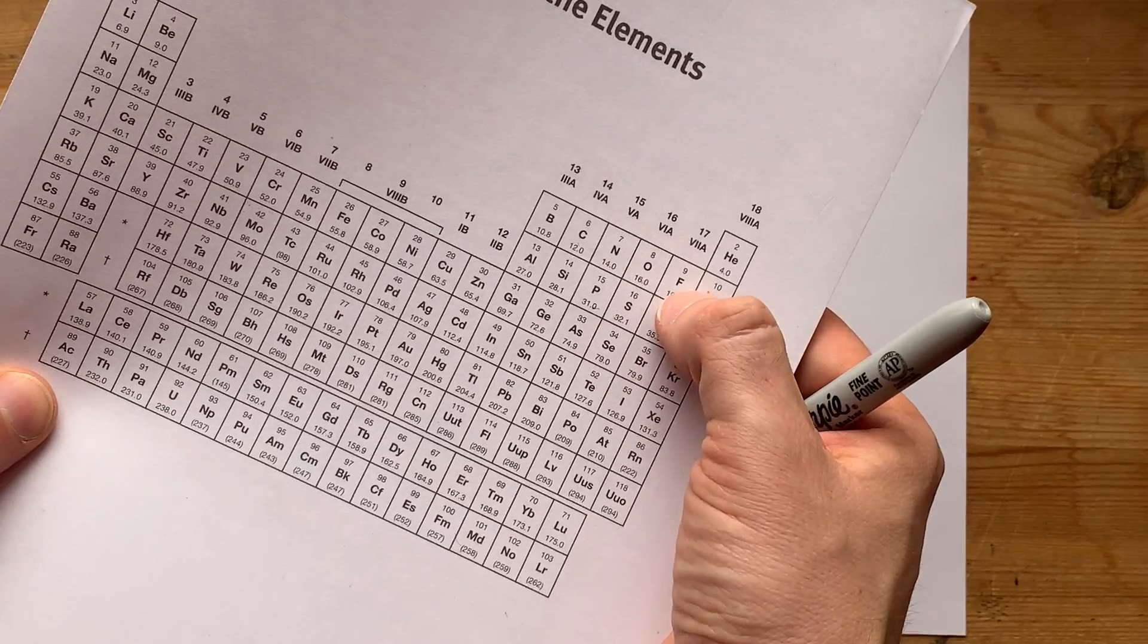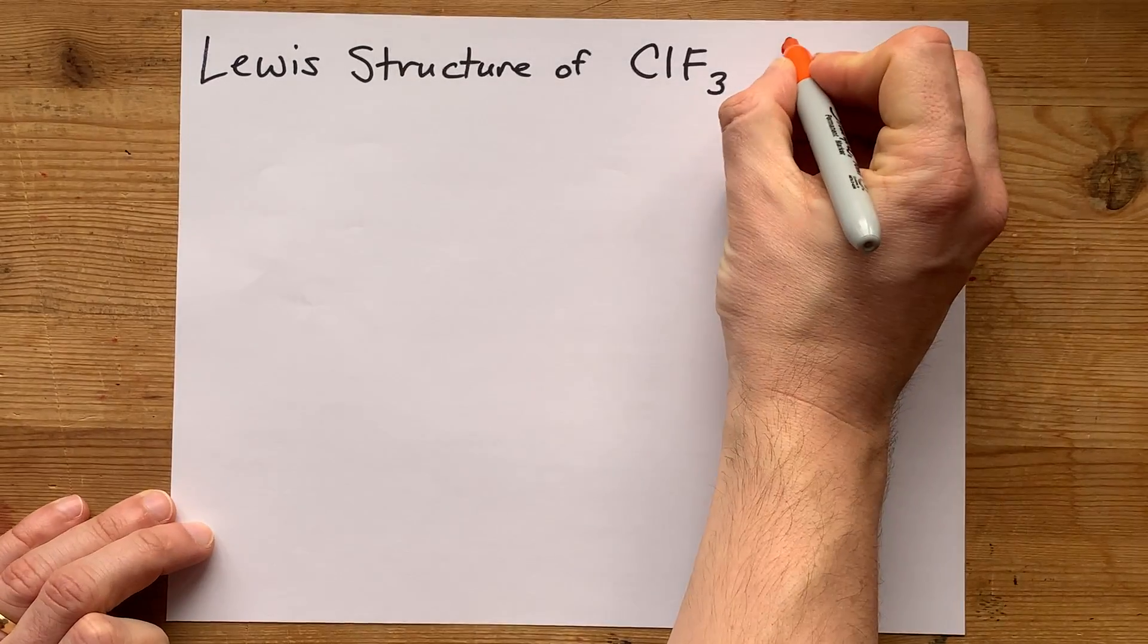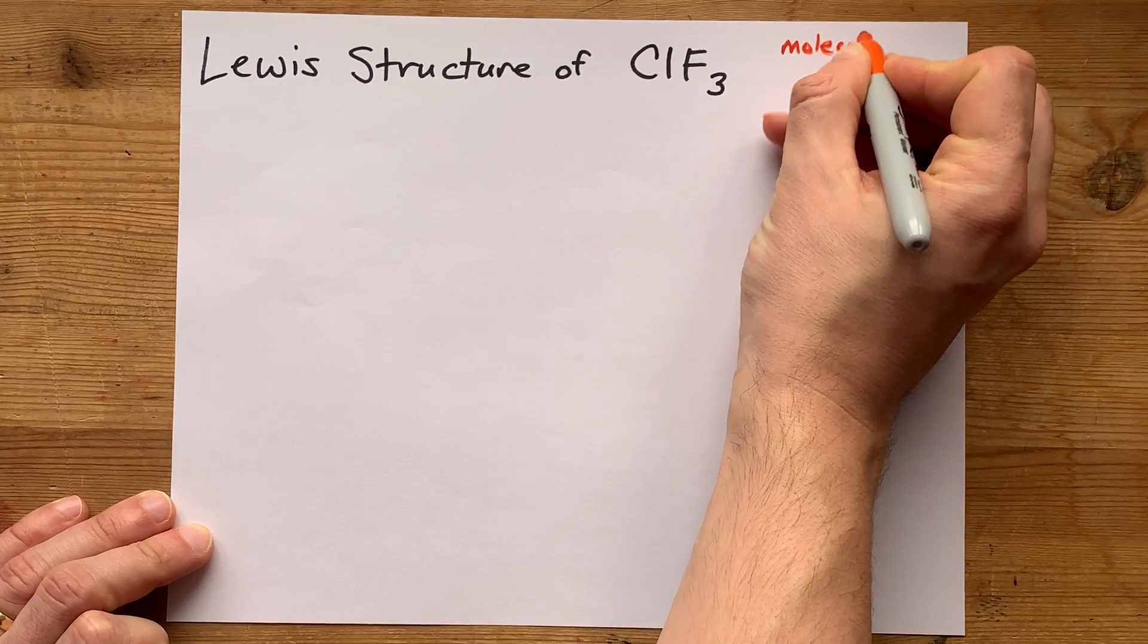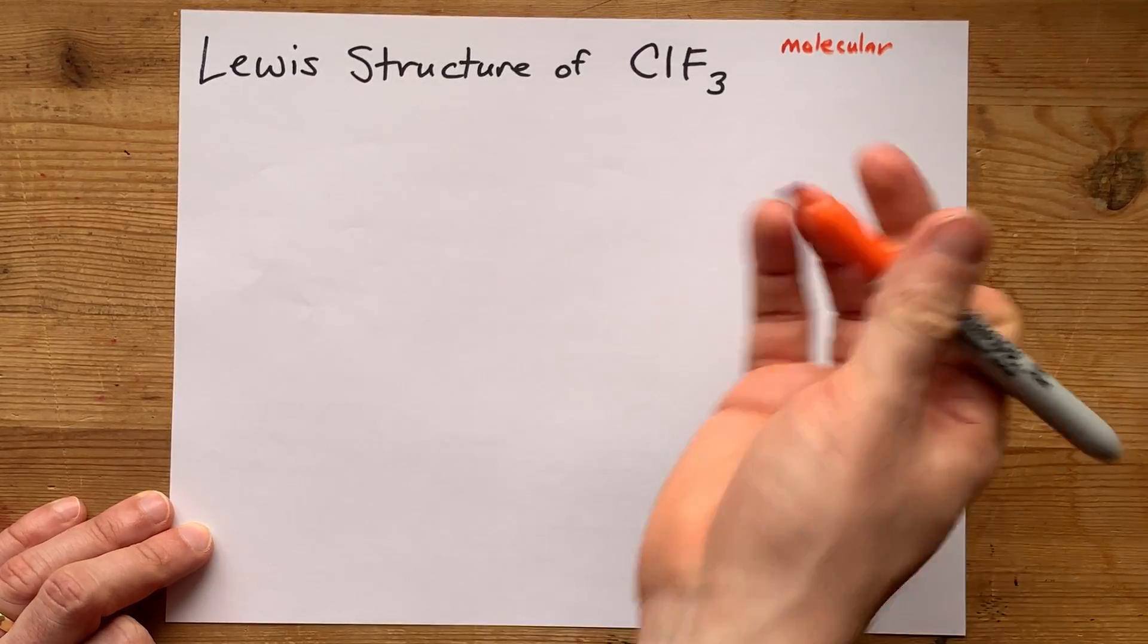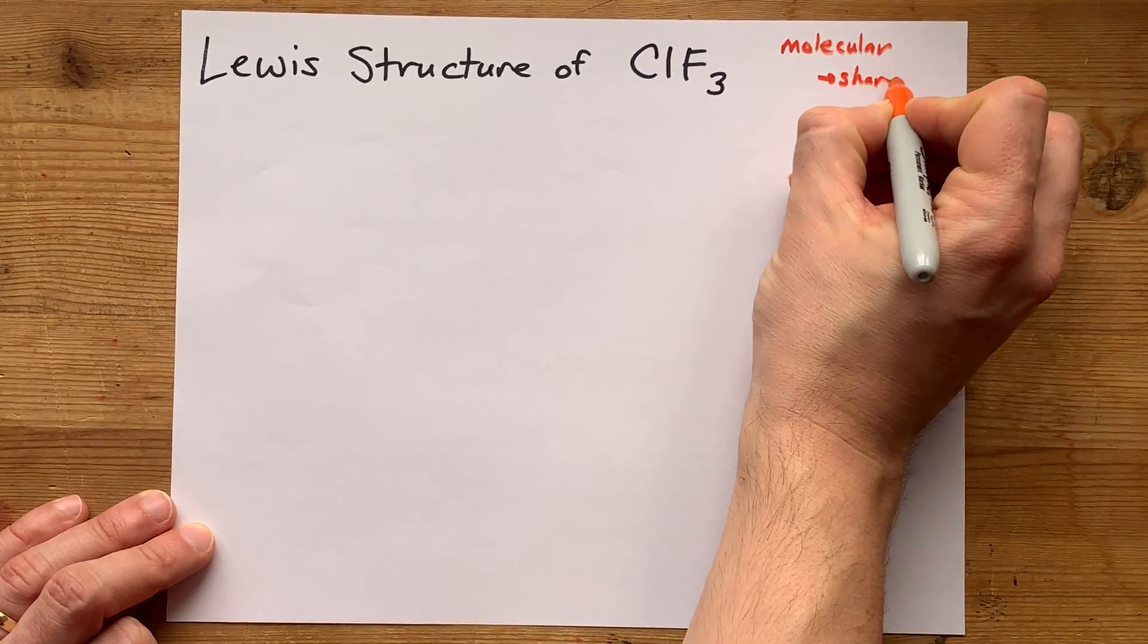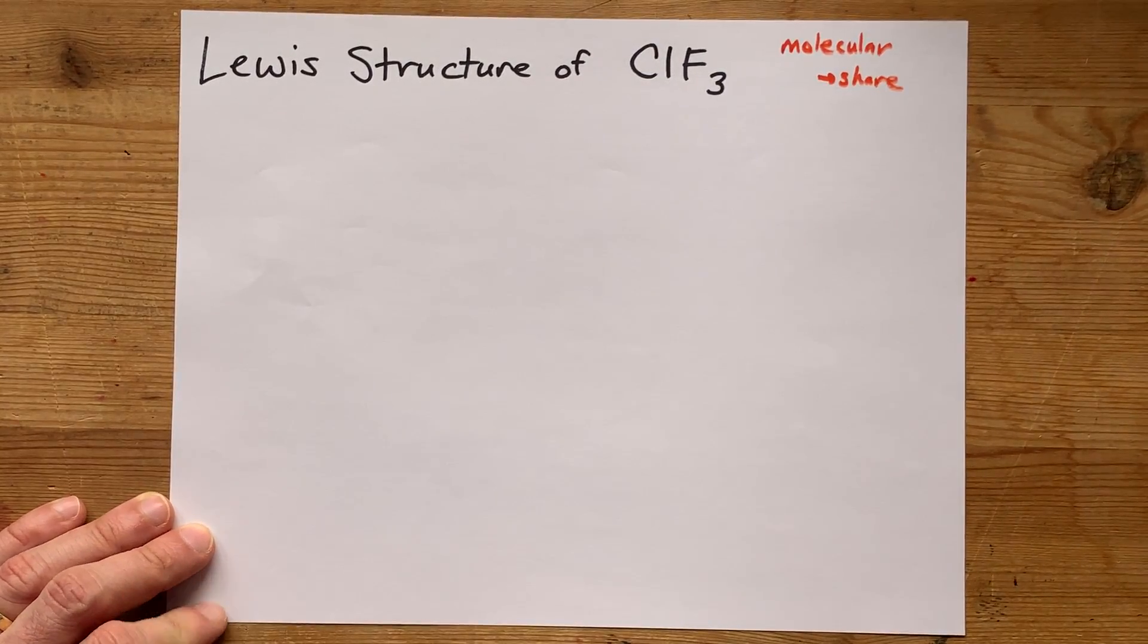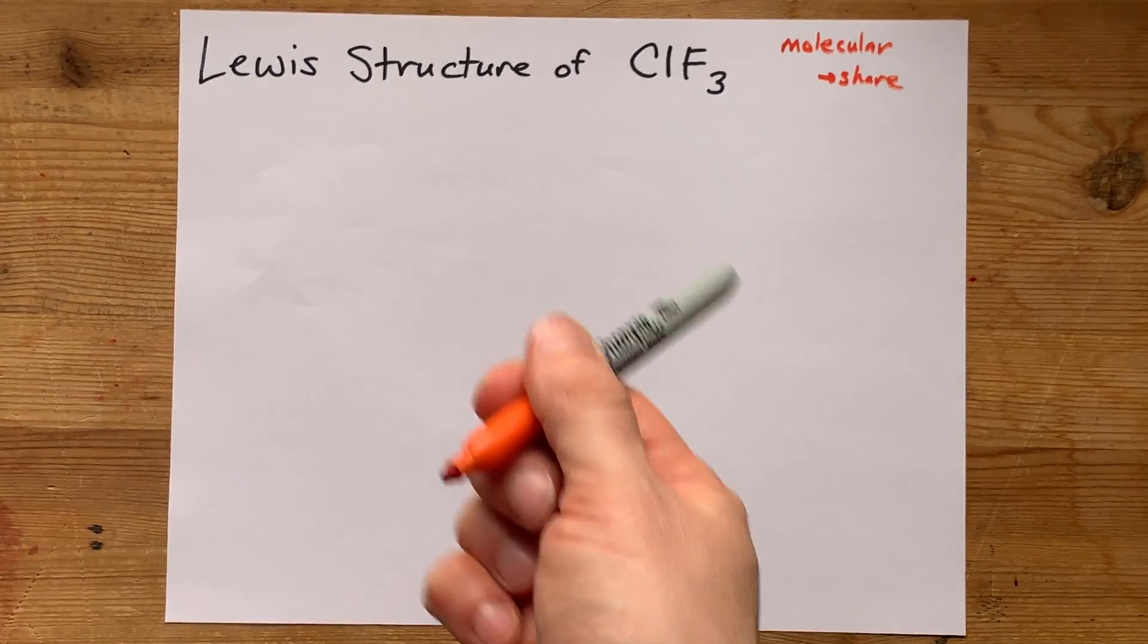Now chlorine and fluorine are both non-metals. That means they're going to combine to form a molecular or covalent compound. These atoms are going to be covalently bonded together. They're going to share their valence electrons. Let's find out how many electrons.